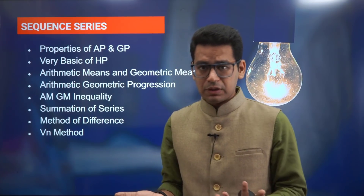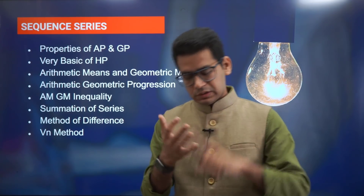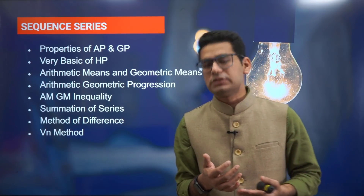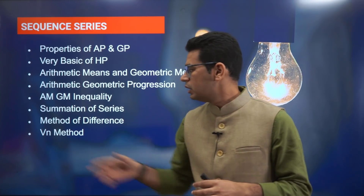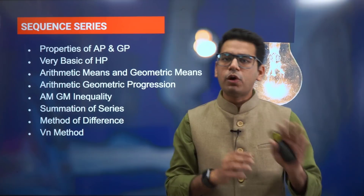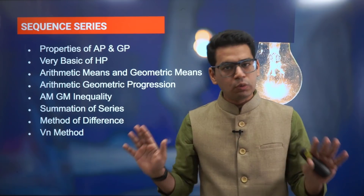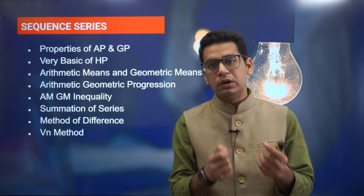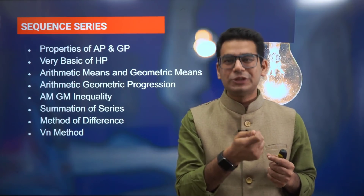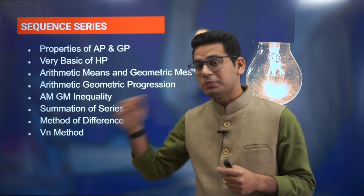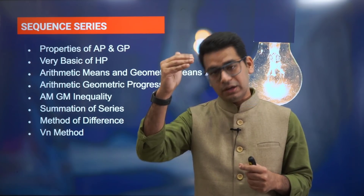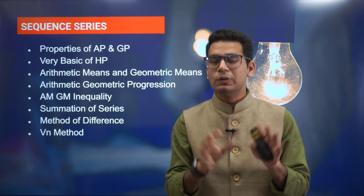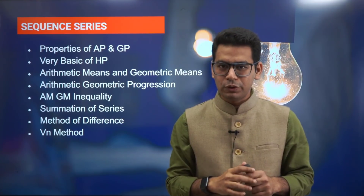Summation of series is the most important topic in this chapter: sum of first n natural numbers, sum of squares of first n natural numbers, sum of cubes of first n natural numbers — nothing more than that needs to be done. The method of difference is good to know but if you don't know it, you can manage. The VN method is something you can do really well — if a tricky question comes in summation of series where all numbers are in the denominators, this process will make it a very easy question.